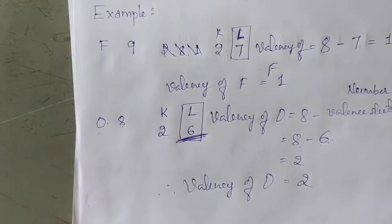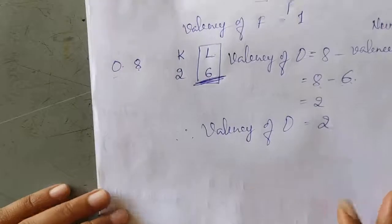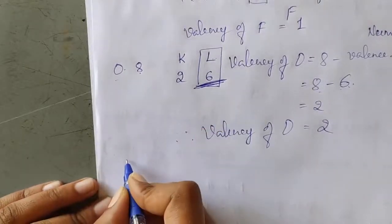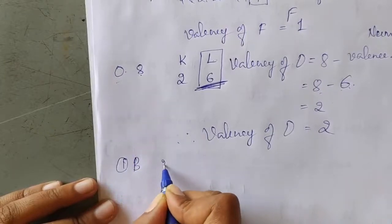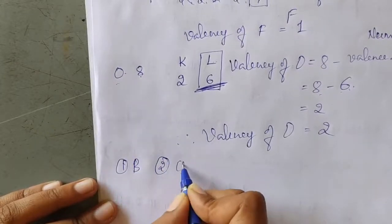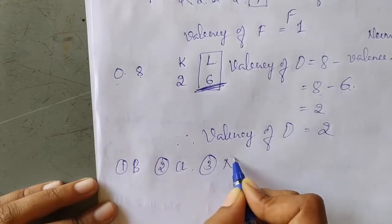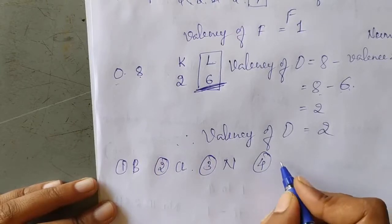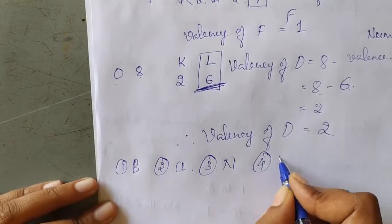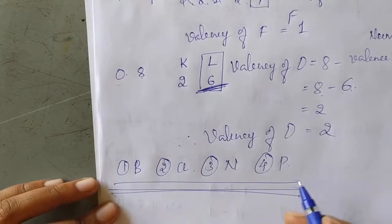This is how we calculate the valency of an element. Children, you can calculate the valency of elements like boron, chlorine, nitrogen, and phosphorus — this is a homework for you.